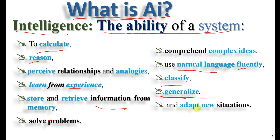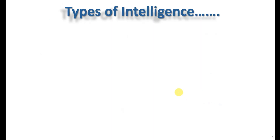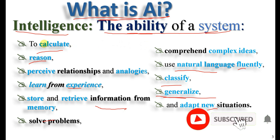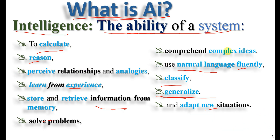Why do we adapt to a new situation? This is a situation where, as a human being, we call it intelligence. Intelligence is the power of thinking — the ability of a system to calculate, reason, perceive, learn from experience, store and retrieve information, solve problems, generalize, use complex ideation, use natural language, and adapt to a new situation. We call it intelligence.